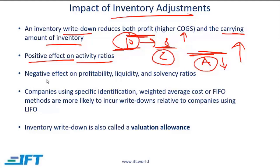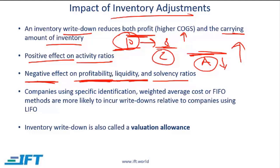On the other hand, inventory adjustments will have a negative effect on profitability ratios, liquidity ratios, and solvency ratios. Profits go down while sales are not impacted, so profitability ratios worsen. Liquidity ratios like current assets over current liabilities will be lower because current assets are lower. Solvency ratios will be higher, which is actually a negative. Companies using specific identification, weighted average cost, or FIFO methods are more likely to incur write-downs relative to companies using LIFO.